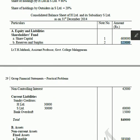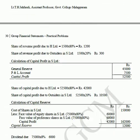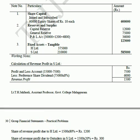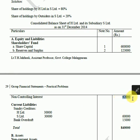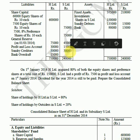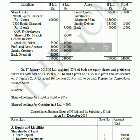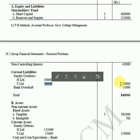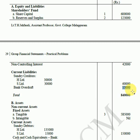Non-controlling interest is Rs.42,000. The next section covers current liabilities. Sundry creditors: HLM Rs.30,000 and SLM Rs.30,000, giving a total of Rs.60,000. Bank overdraft is Rs.15,000 from HLM. The total of Section A of the consolidated balance sheet is Rs.8,40,000.